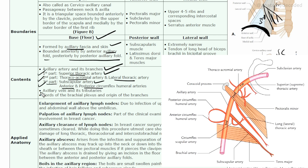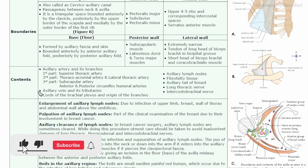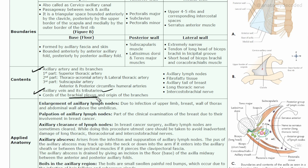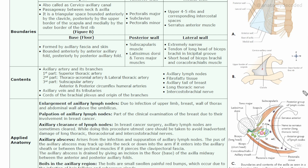Other contents of the axilla include the axillary vein with its tributaries, the cords of the brachial plexus and some of their branches, axillary lymph nodes, fibro-fatty tissue, the axillary tail of Spence (part of the mammary gland), the long thoracic nerve, and the intercostal brachial nerve.